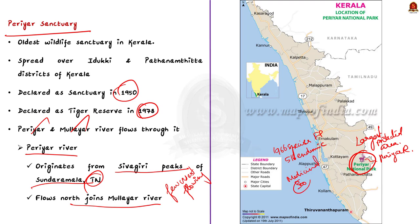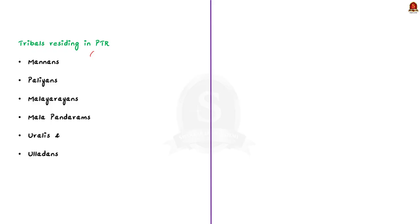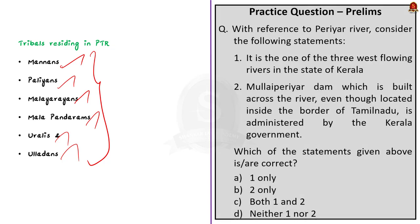Regarding fauna, the reserve supports mammals like tiger, elephant, lion-tailed macaque, and nilgiri tahr, birds like darters, cormorants, kingfishers, the great Malabar hornbill and racket-tailed drongos, and reptiles like monitor lizards, python, and king cobra. There are six tribal communities nested inside the reserve: Manas, Palians, Malayarayans, Malapandarams, Uralis, and Ulladans. These are very important points to note about Periyar Tiger Reserve — you might get a preliminary question on this topic.